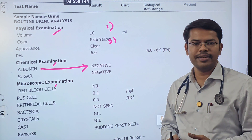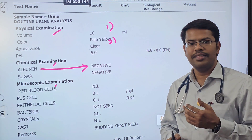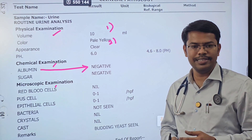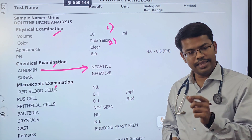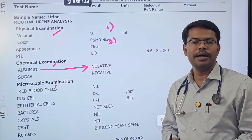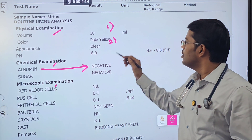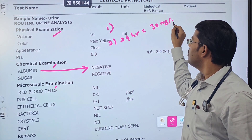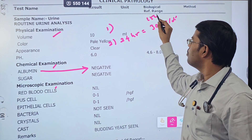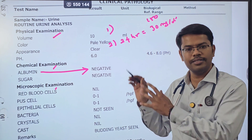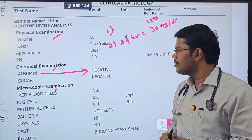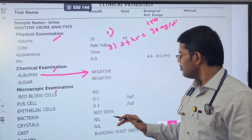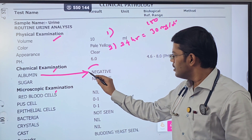In a 24-hour urinary sample, the normal protein excretion is 150 milligram per deciliter over 24 hours. Of that, albumin alone is 30 milligram per deciliter over 24 hours. So the normal albumin is 30 mg/dL and overall protein is 150 mg/dL — that is the normal reference.